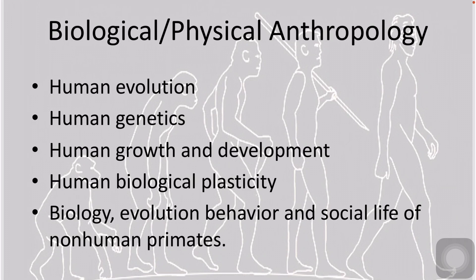These interests link physical anthropology to other fields: biology, zoology, geology, anatomy, physiology, medicine, and public health. More than a century ago, Charles Darwin noticed that variety within any population permits some individuals — those with favorable characteristics — to do better than others at surviving and reproducing.